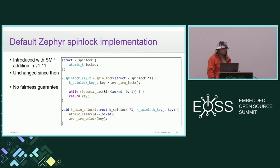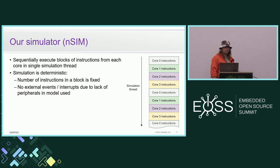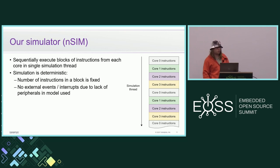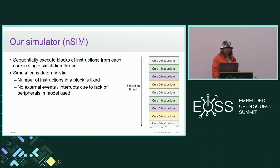Now a few words about our simulation. Our simulator can simulate a multi-core processor by running blocks of instructions from each core in a single simulation thread. It executes a block of instructions from core zero, then core one, two, three, and then again core zero, one, two, three and so on. The simulation is deterministic — the number of instructions in each block is fixed, and there are no external events or interrupts in this case because there were no peripherals in the model we were using.